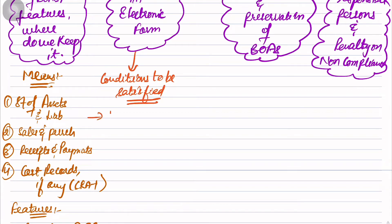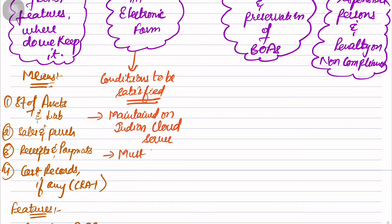Condition number one: maintained on Indian cloud server. You are not allowed to maintain it on a foreign cloud server. Condition number two: must be accessible only in India. Those Books of Accounts must be accessed only in India - you are not allowed to access them outside India.